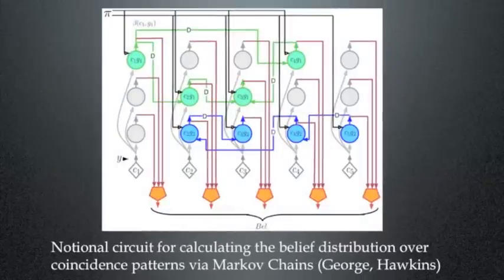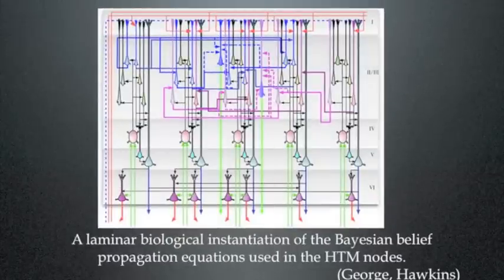And just to go back to George and Hawkins again, this is their notional circuit for calculating the belief distribution in their hierarchical temporal memory using what they call Markov chains. I don't claim to be able to follow their maths very well. I'm afraid it's a bit too complicated for me. Now here, in this picture, they've superimposed the two previous pictures, and you see how the biology of the cortex with its separate layers, which you can see down on the right-hand side of this slide, the separate layers can be related to the hierarchical temporal memory nodes, which are mathematical, of course. They're mathematical functions.